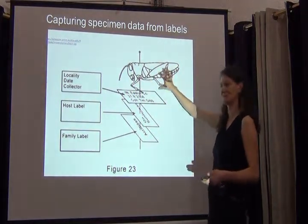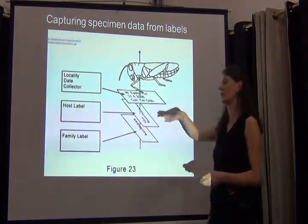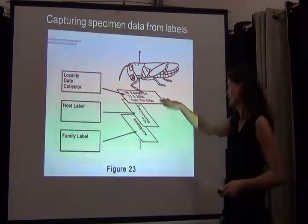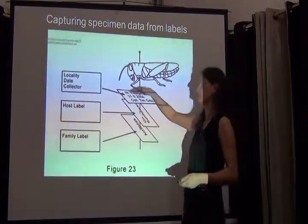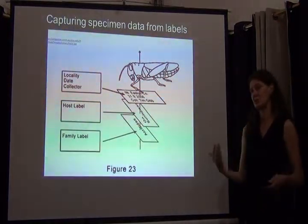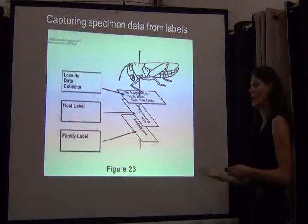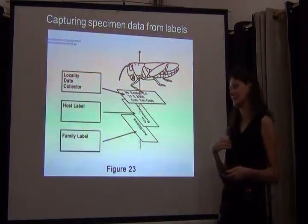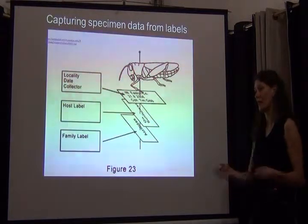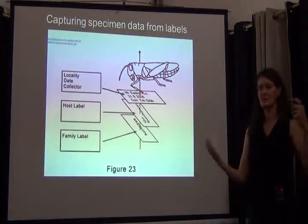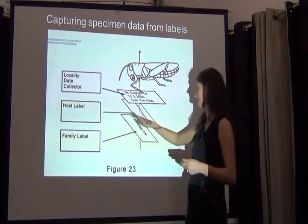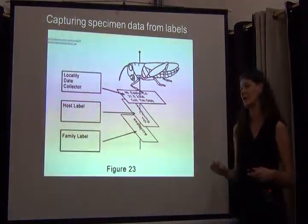You typically have not only one label sitting underneath a specimen, but very frequently multiple labels. On the top label you would have the locality, the date, and the collectors — some of the most crucial pieces of information when we think about data capture of insect specimen collections. For our ADBC digitization project, where Melissa, Cam, and I are collaborating, we're interested in associations between insects and host plants. So the host labels that typically sit underneath the locality label are very, very important and crucial.